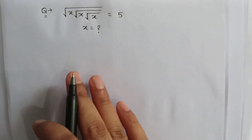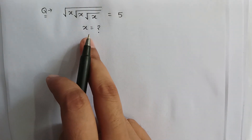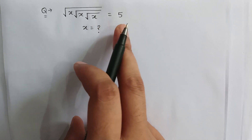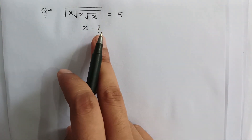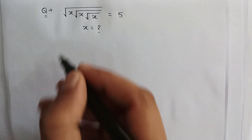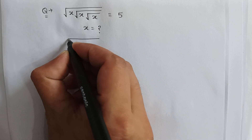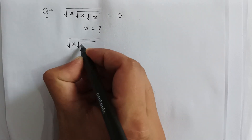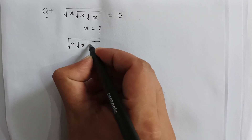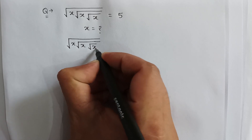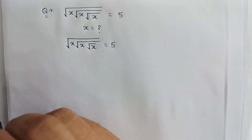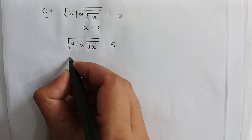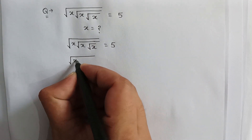Here is a very nice radical problem. Square root of x times square root of x times square root of x is equal to 5. We have to find the value of x. So: √x · √x · √x = 5. Squaring both sides...